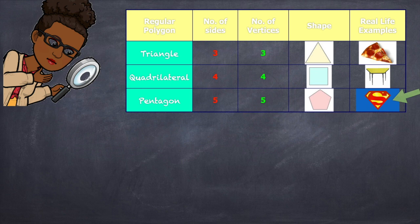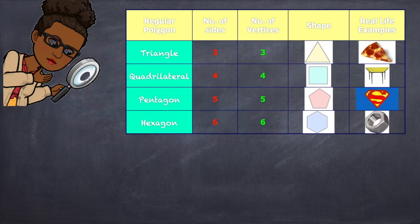Hexagon. The word hexa means six. Therefore, it has six sides and six vertices. Our mechanics have seen that before. We know what those screws look like.